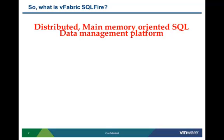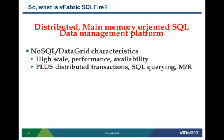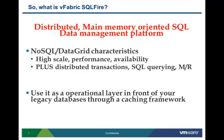If you are already familiar with distributed data grids like Oracle Coherence, Gemfire, or Data Fabrics, or NoSQL databases like Cassandra or HBase, you already know a lot about this product. It essentially offers the same set of characteristics of very high scale performance and availability. But it also goes beyond to offer things like distributed transactions, a sophisticated SQL querying engine with main memory indexing, a MapReduce framework built in, and a caching framework so you can use it alongside your existing relational or other data sources.